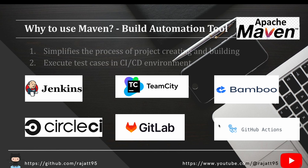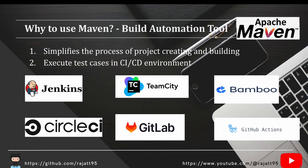When we create a Maven project, Maven simplifies the process of project creation. The Maven project comes with a file called pom.xml, and you need to select an archetype first. Maven creates a project structure for you with folders like src/main/java, src/test/java, and src/test/resources. The src/test/java directory is where we keep our test cases, whether they belong to a web application, mobile application, or APIs.